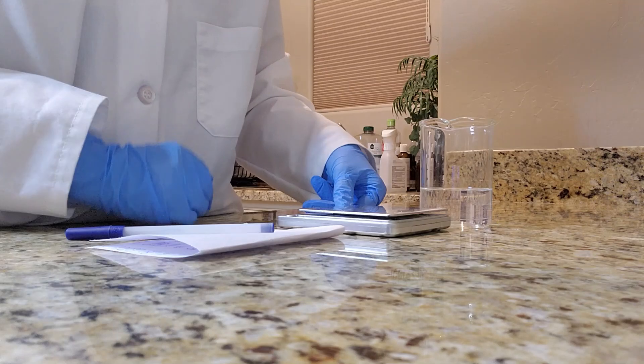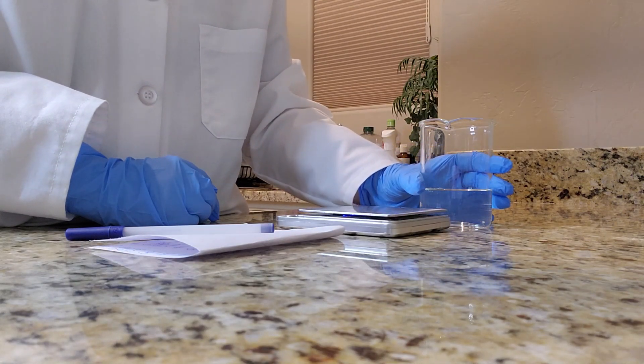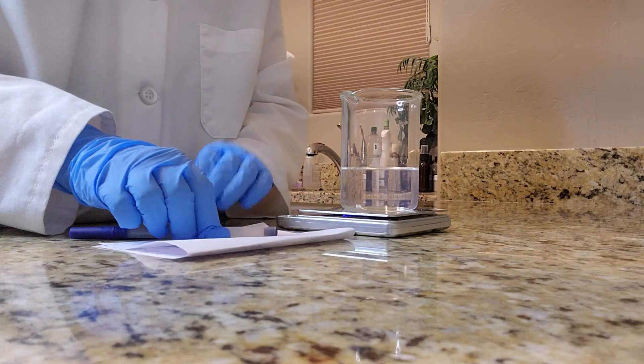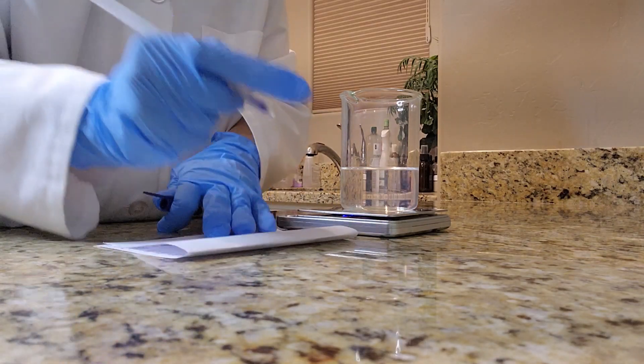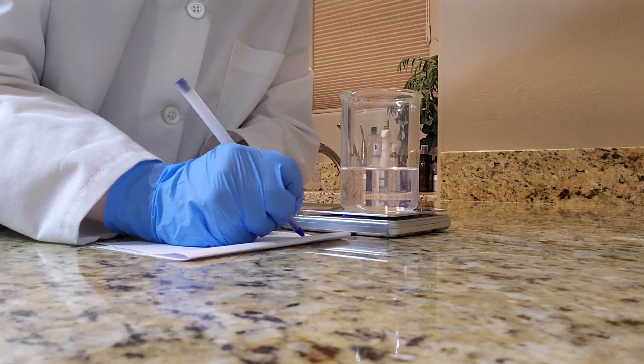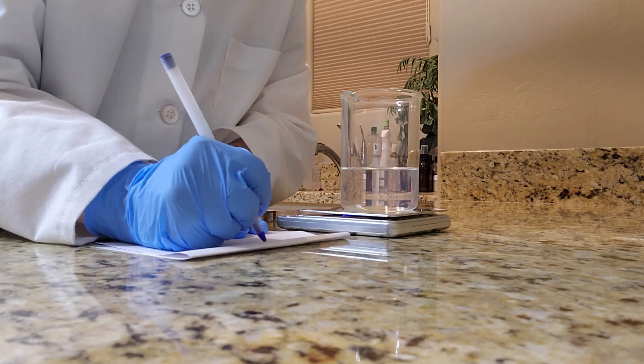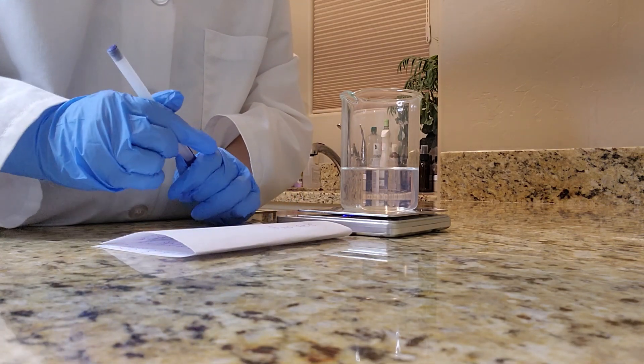Now I'm going to turn my scale on and then weigh this container with all the water ingredients. Once that number has been recorded I'm going to write this down and this will be useful later on when it comes to me making this formula and I'll show you how later.